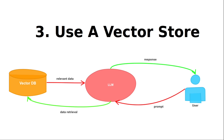A vector store is a collection of vectors that are basically embeddings of different pieces of information. So instead of storing information in a database in natural language, you embed that information and store the embeddings in a vector store or vector database. When the user asks 'what's the price of a Tesla Model X?', the LLM doesn't simply respond based on what it was trained on — it goes into the vector store and finds the latest price. Using that relevant information combined with the user prompt, the LLM generates its response based on the latest information. LLMs basically understand vector stores and word embeddings.